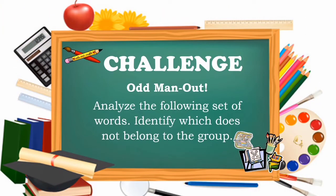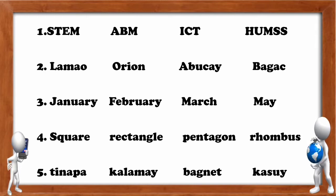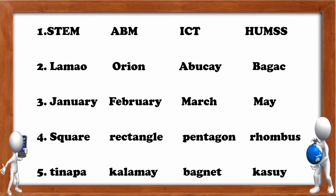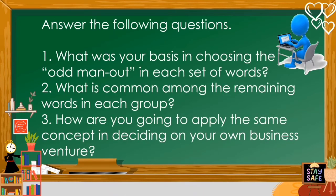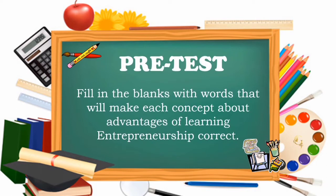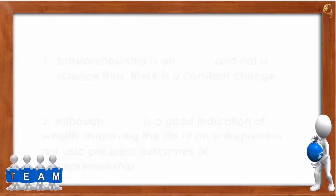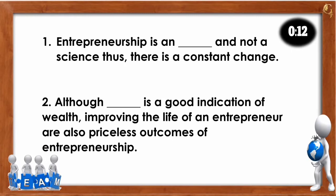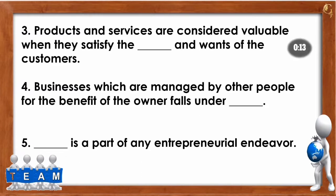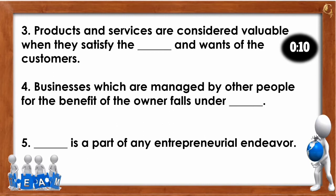Let's have a challenge first — it's called Odd Man Out. Analyze the following set of words and identify which does not belong to the group. You also have guided questions. For the pre-test, fill in the blanks with words that will make each concept about the advantages of learning entrepreneurship correct. Make sure to observe the time.